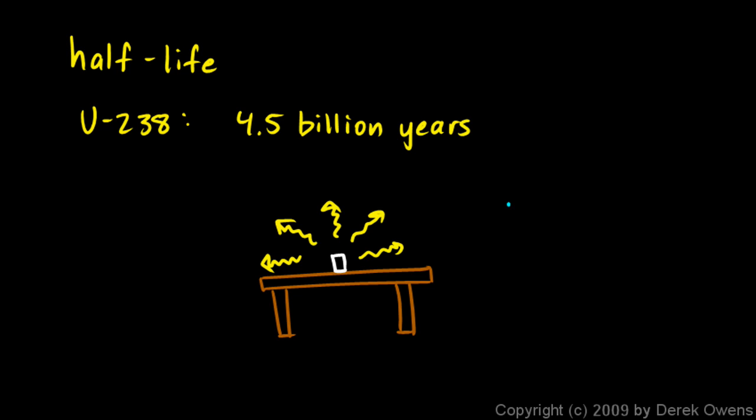It turns out that just from about one half pound of uranium, you're going to get about 3 million alpha particles per second.